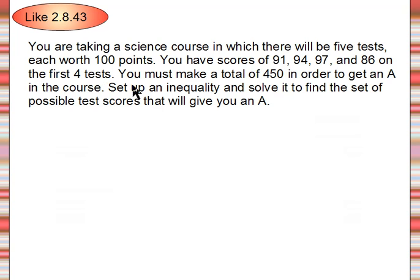It also says that you have to make a certain total amount, 450, in order to get an A in the course. Now we know if your total amount of scores is higher than 450 and 450 will give you an A, then you'll still have an A. So what we're looking to do here when it's talking about total is add these numbers up.